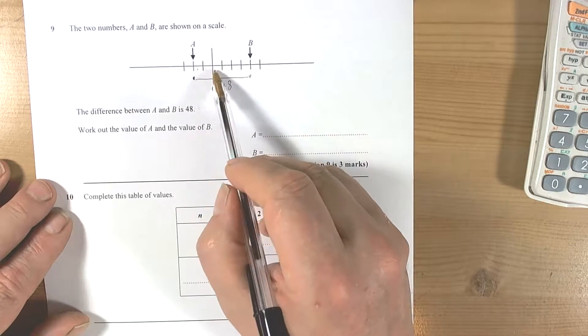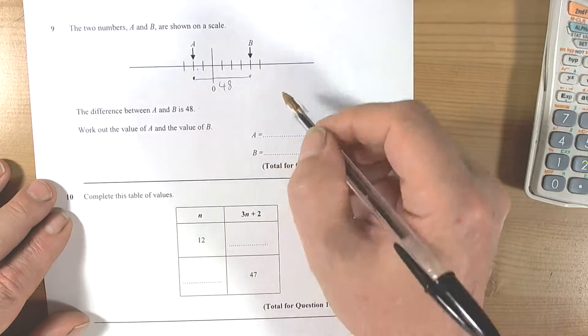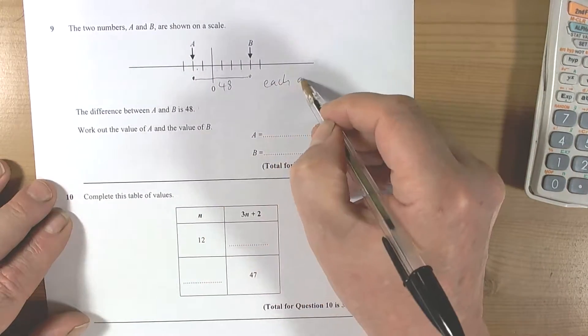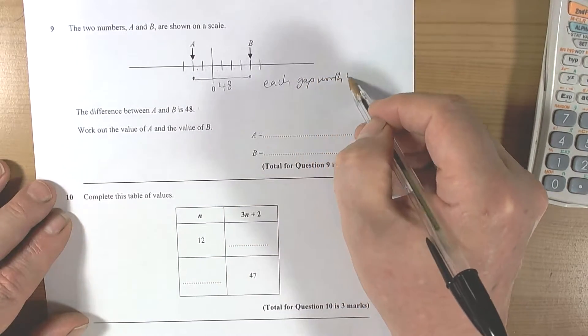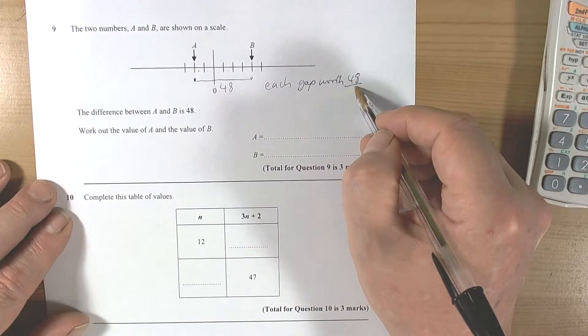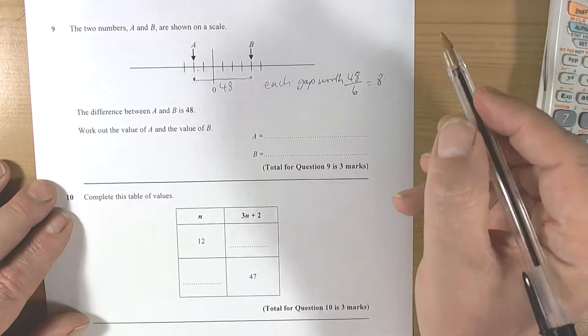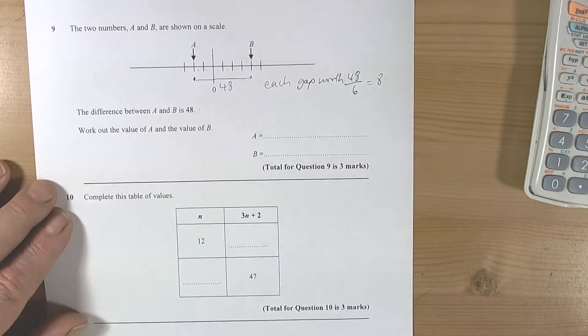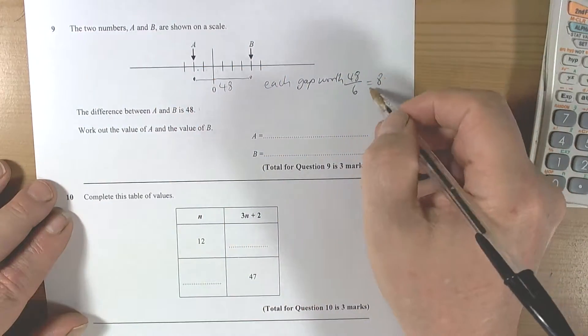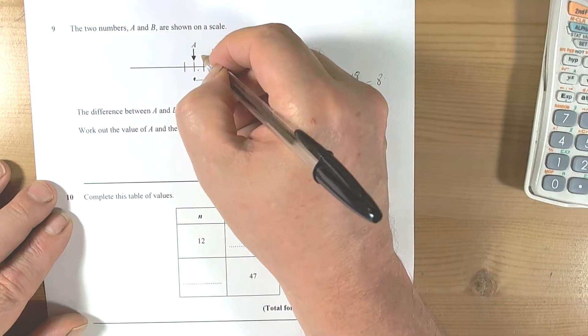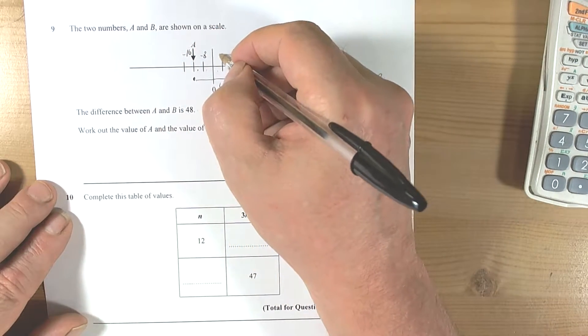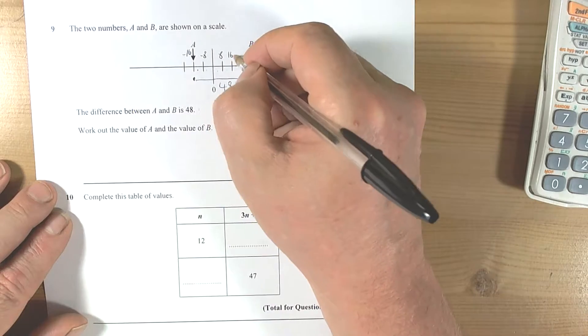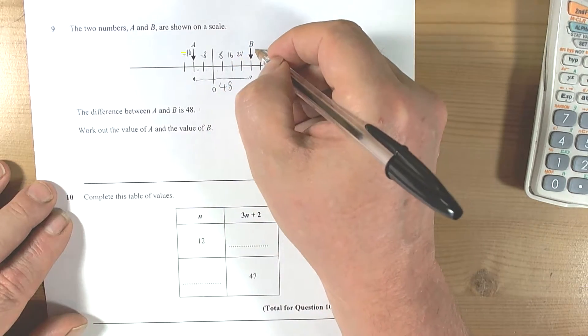So how many gaps do we have? One, two, three, four, five, six gaps. So each gap worth 48 divided by 6, which is 8. So work out the value of a and the value of b. Well, if we've got a gap of 8, then that will be negative 8, that'll mean negative 16, and that'll be 8, 16, 24, 32.